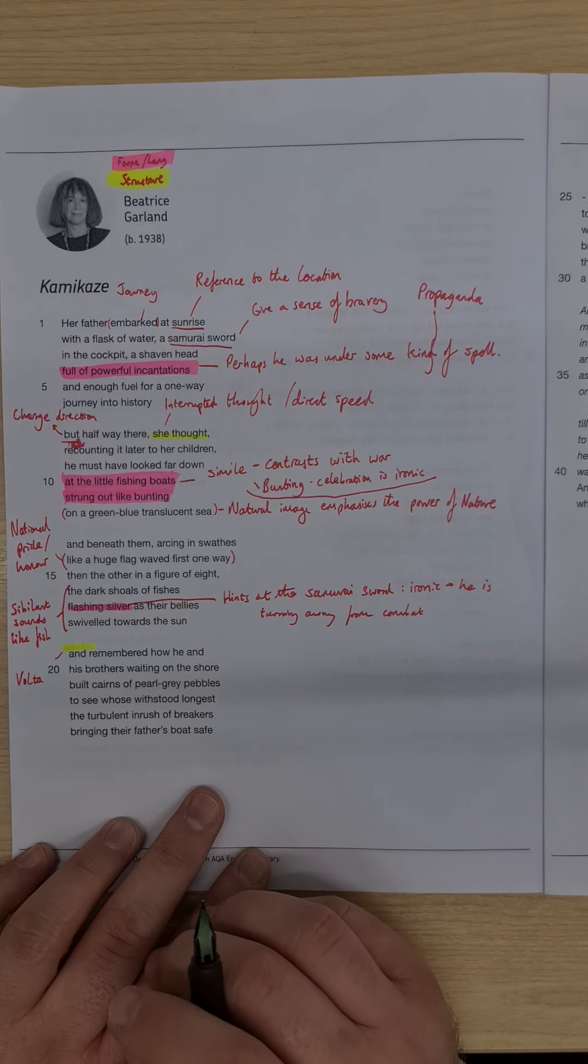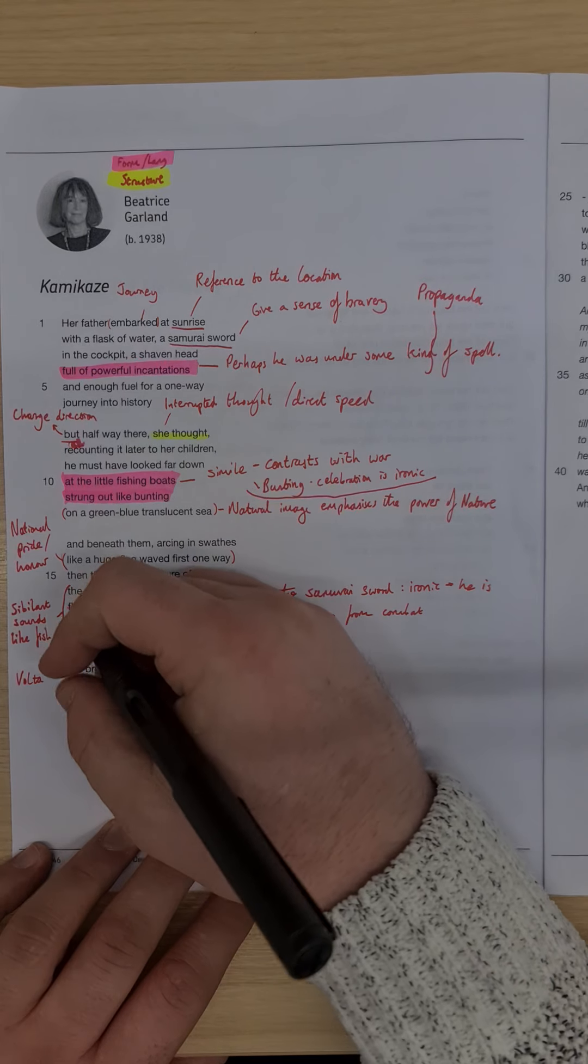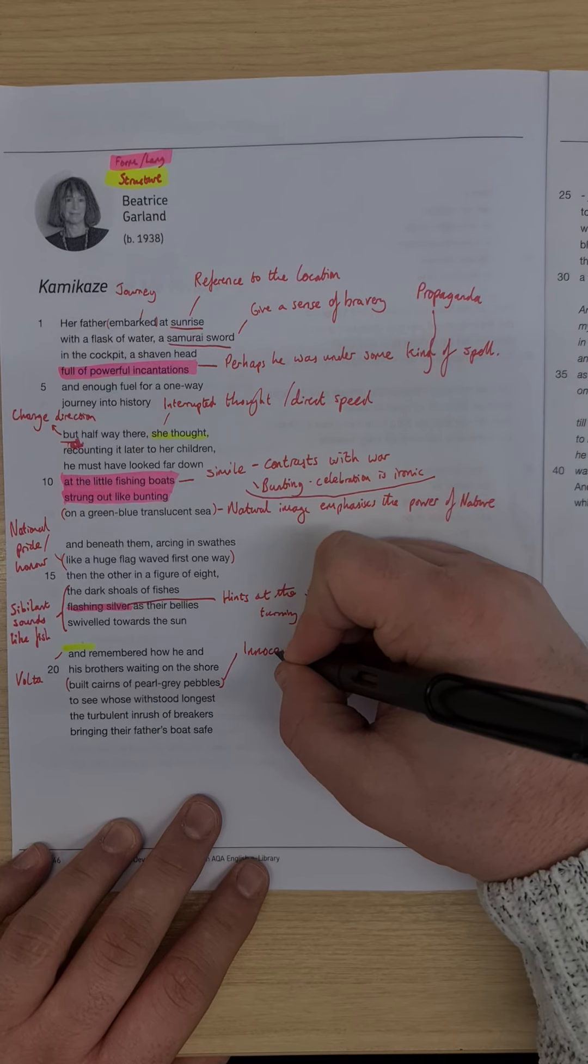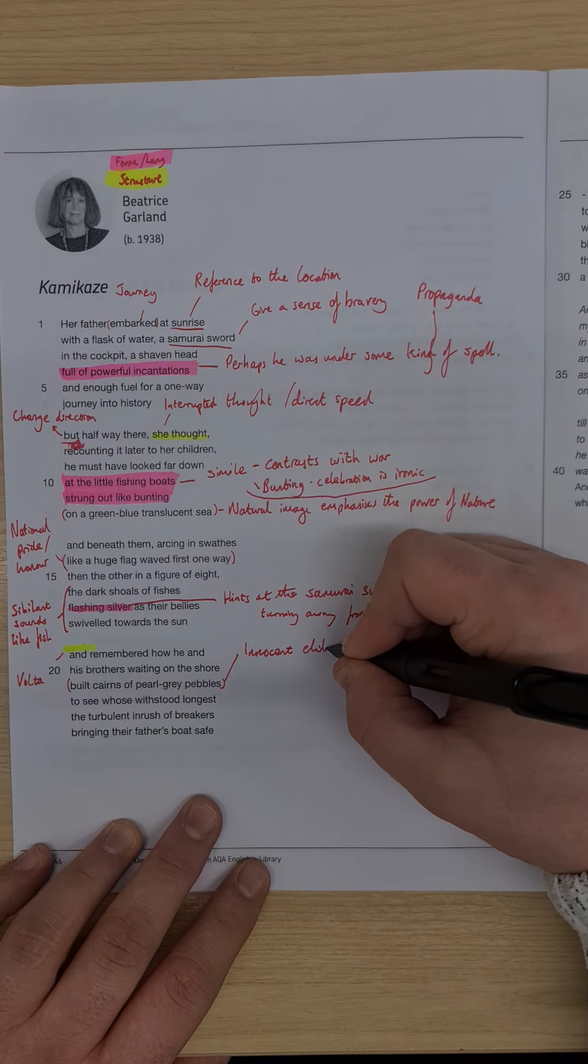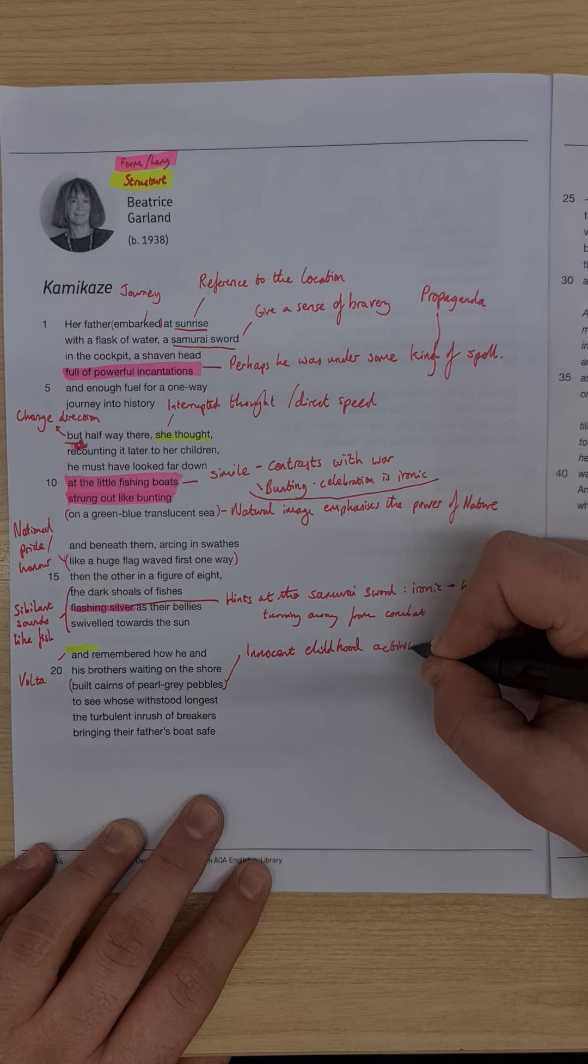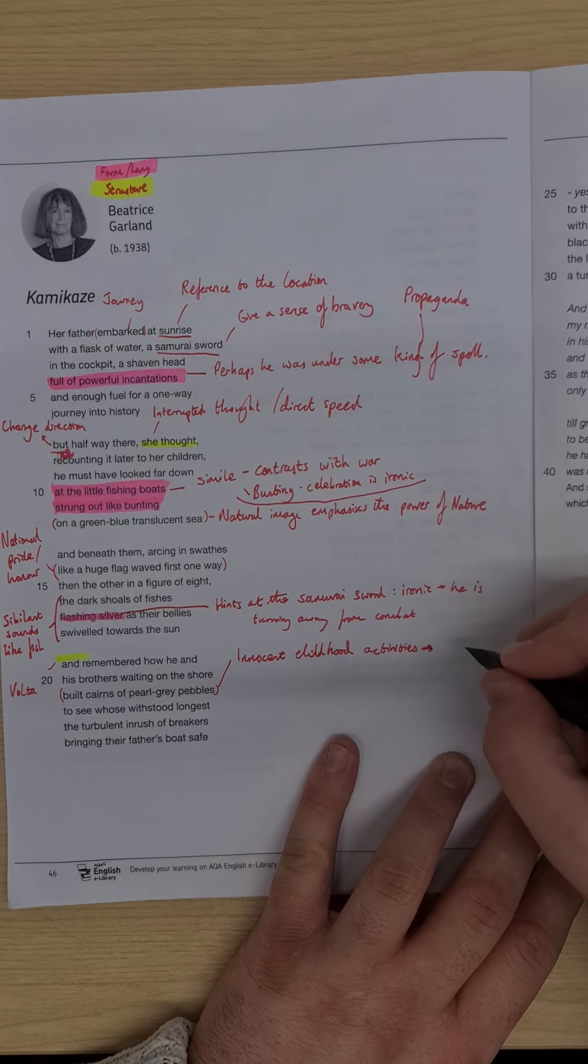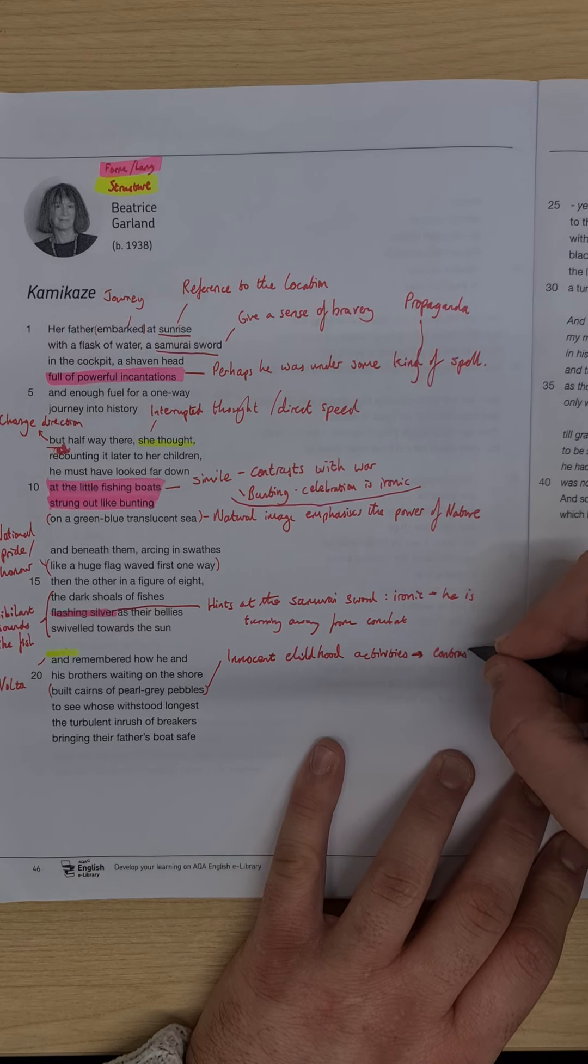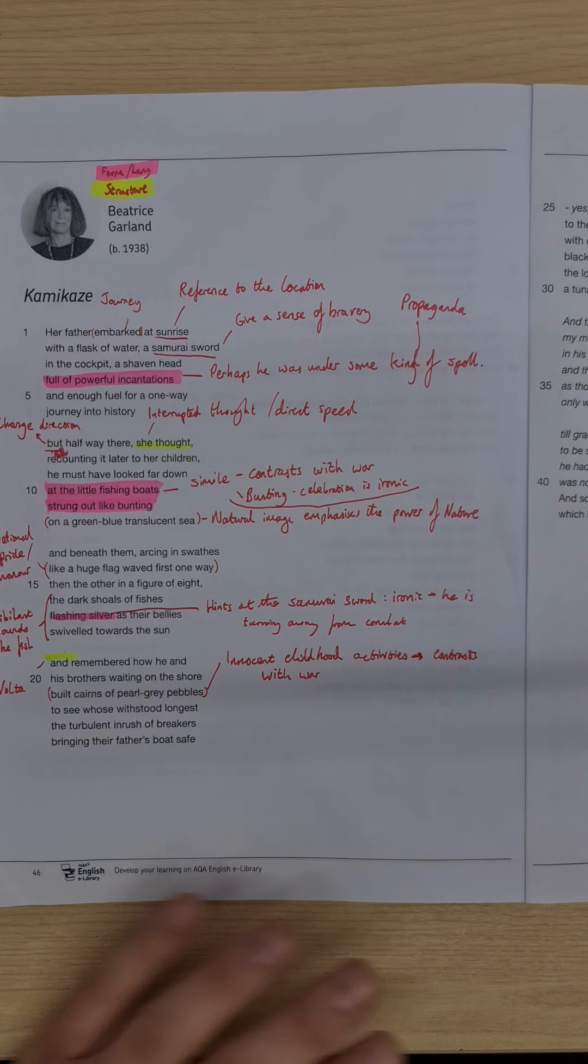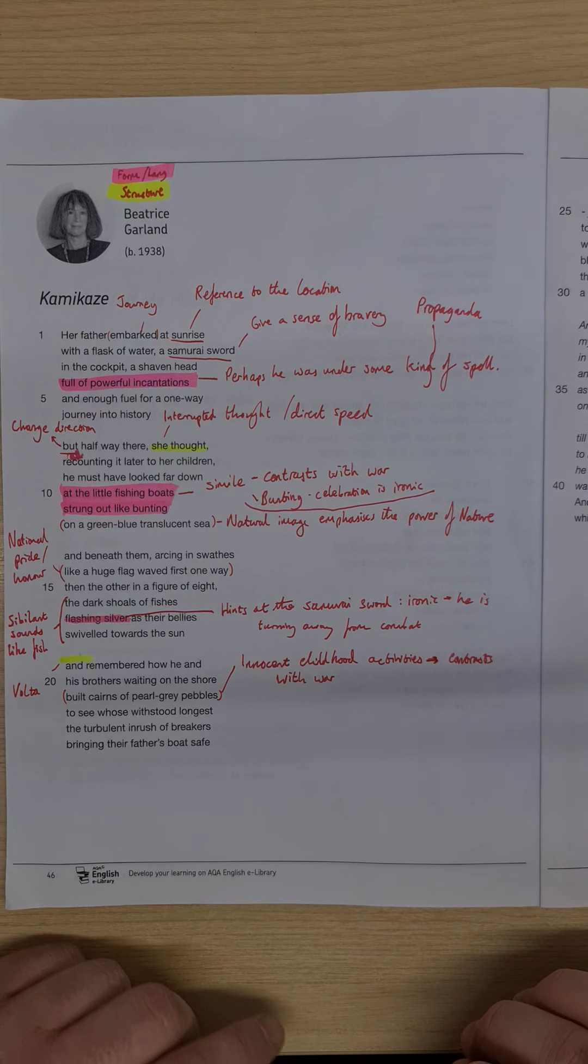And remembered how he and his brothers waiting on the shore built cairns of pearl grey pebbles. Innocent childhood activities. You should be picking up now that those innocent childhood activities that we're talking about here contrasts with war. Anything but innocent and anything but childhood.